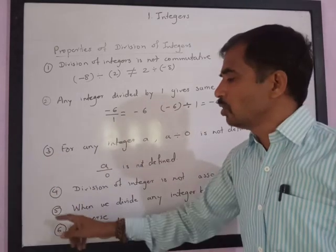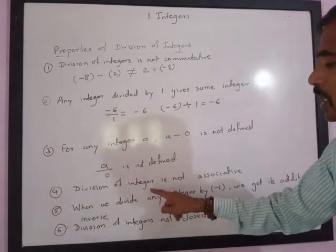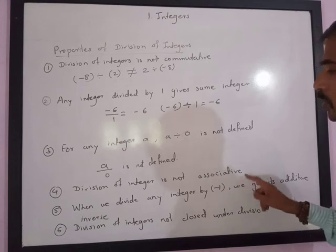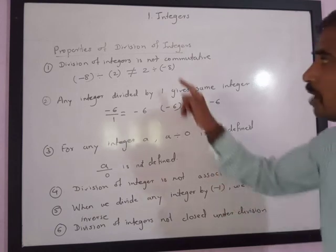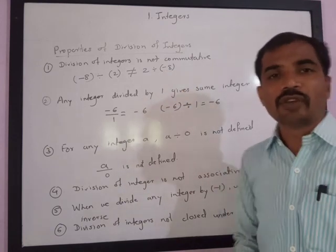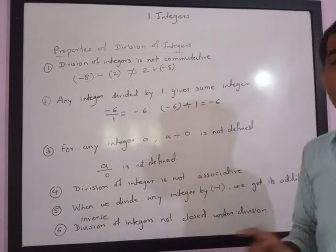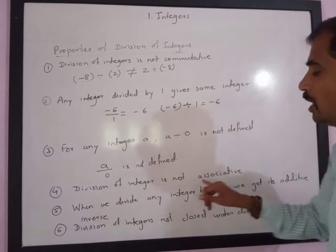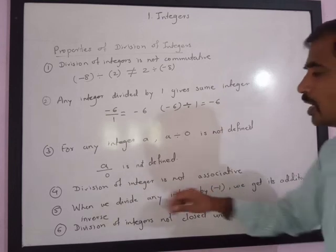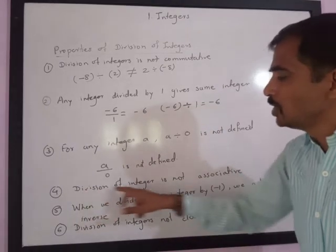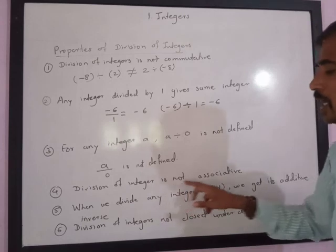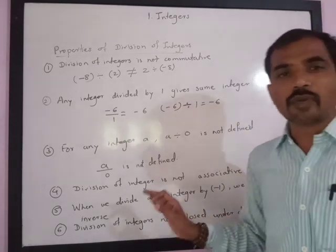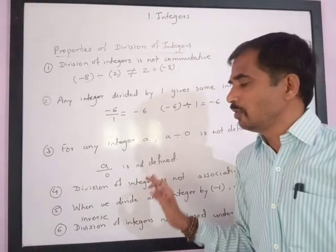The fourth property is that division of integers is not associative. If you change the sequence of division, you will not get the same answer. You cannot change the sequence while doing division.